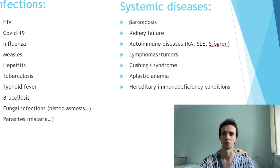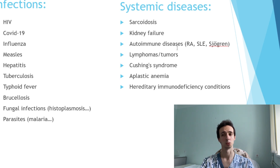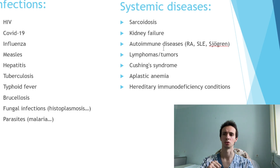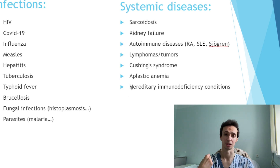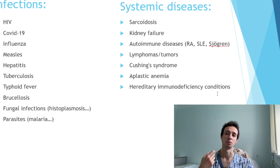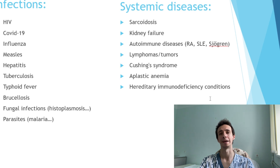Next, systemic diseases where there is some inflammation or an autoimmune component — when the immunity is attacking the body's own organs. Here you can see sarcoidosis, kidney failure, different autoimmune conditions like rheumatoid arthritis, lupus, Sjögren's disease, different tumors or lymphomas. Aplastic anemia, for example, when the bone marrow is not functioning well and it's not producing enough blood cells — usually not only lymphocytes will be low. Then hereditary immunodeficiency conditions, when the immunity is low by genes and these people will often have recurrent infections.